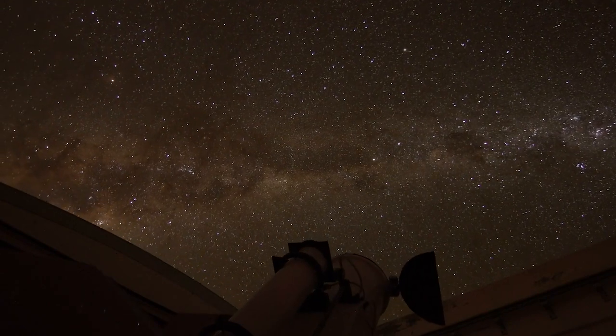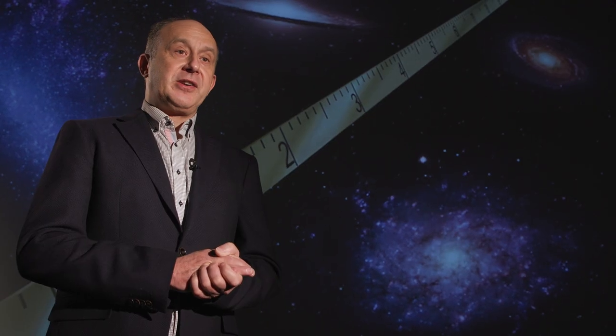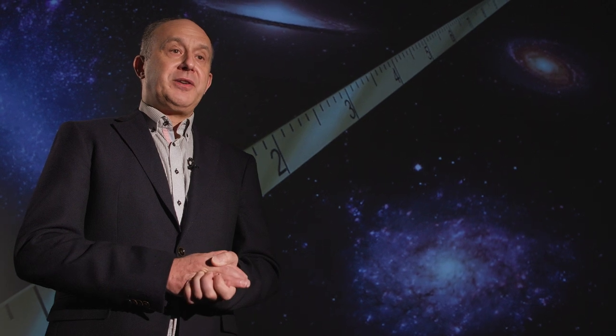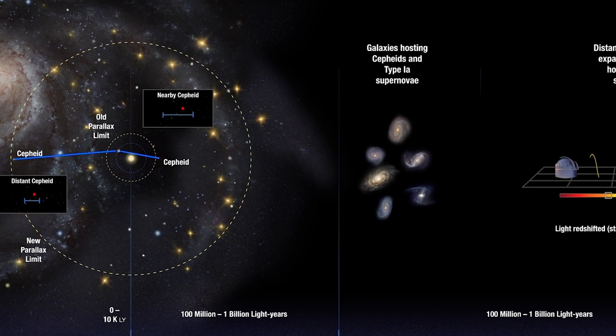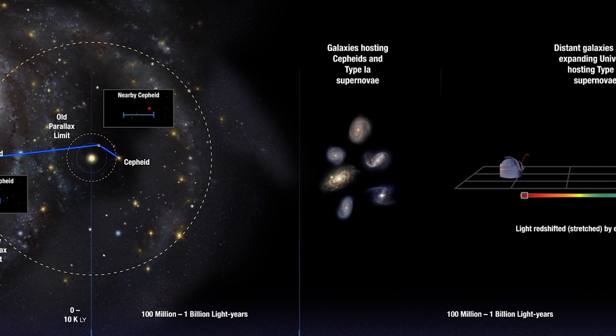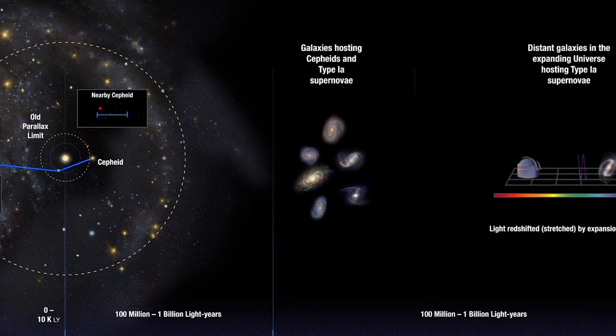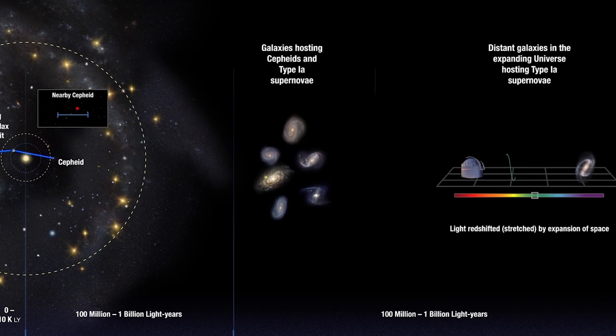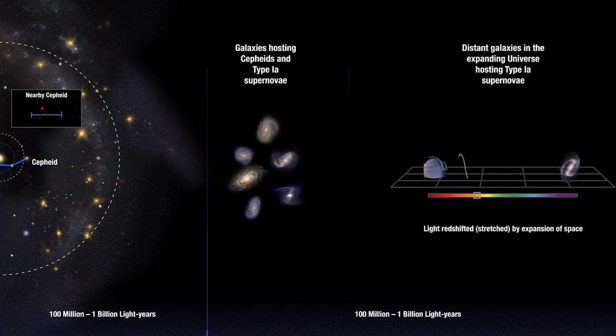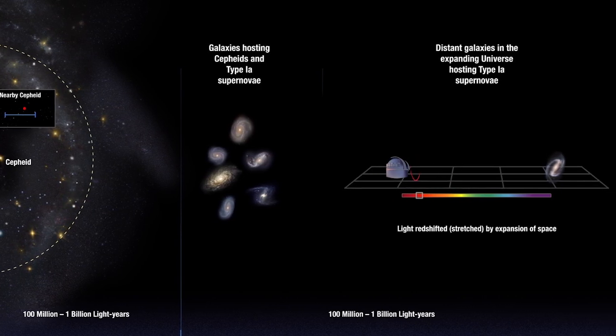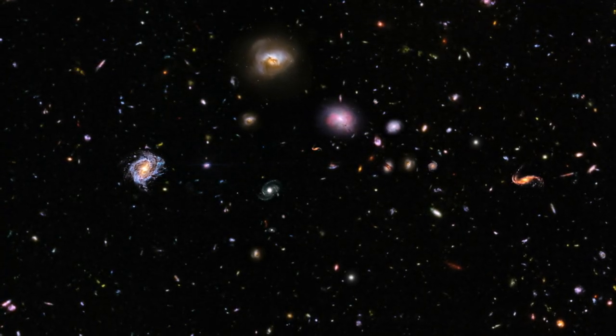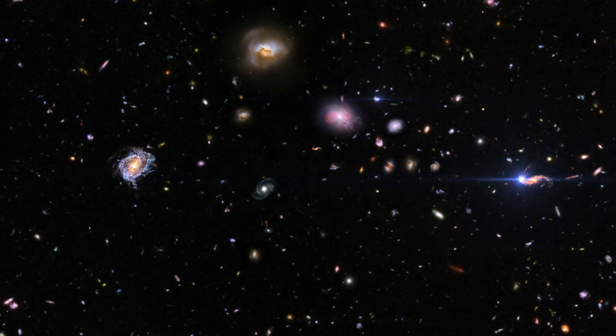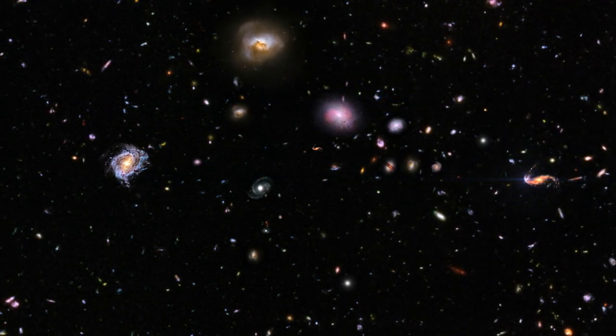In order to measure the Hubble constant using the classical approach we need several different techniques, because it's not possible to measure distances to all objects in the universe. We need to start with geometrical techniques which can be applied to nearby objects, then we can use them to calibrate other techniques which can serve us to reach galaxies located much farther away. And then finally we can calibrate long range distance indicators like supernova. All together we can measure distances at different locations and measure the expansion of the universe or the value of the Hubble constant.